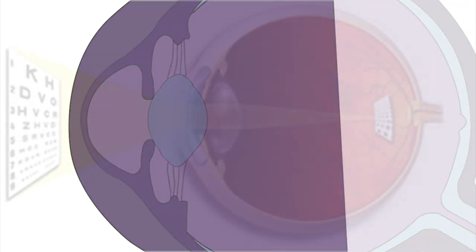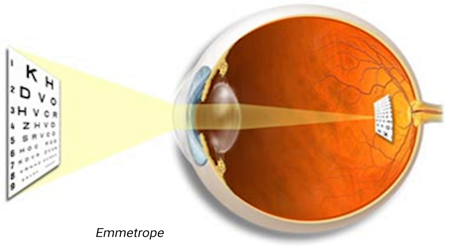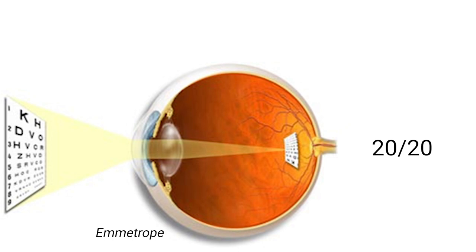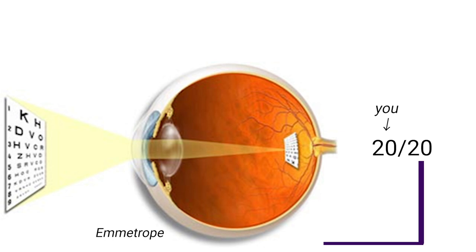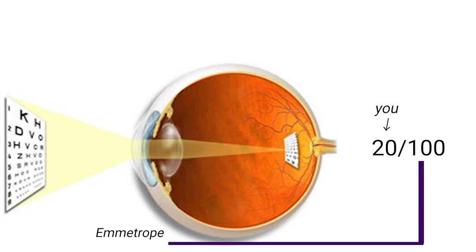The eye we've been playing around with here is that of an emetrope — basically someone who wouldn't need corrective lenses to see clearly, or 20-20 vision in eye doctor terms. In the number-number vision system, that means you versus an emetrope. 20-10 means you can see at 20 feet what an emetrope can see clearly at 10 feet. 20-100 means you at 20 feet can see clearly what an emetrope can see clearly at 100 feet — so definitely needing some correction there.